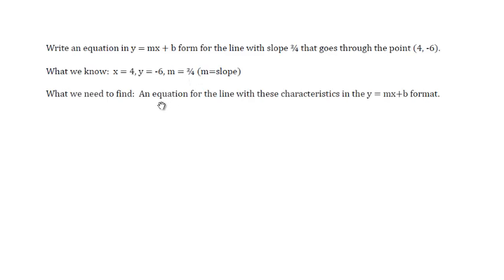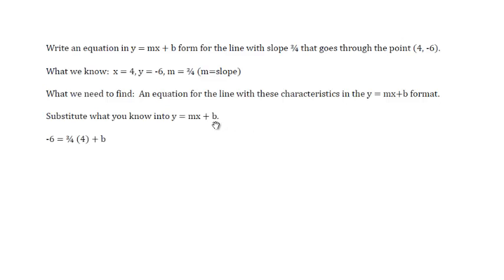What we need to find is an equation for this line in the y equals mx plus b format. We substitute what we know into y equals mx plus b: for y, we put negative 6; for m, we put the slope three-fourths; and for x, we put 4. Then we have plus b. Now all that's unknown is b, and we can solve for it. Multiplying three-fourths times 4, the 4s divide out and we're left with 3.